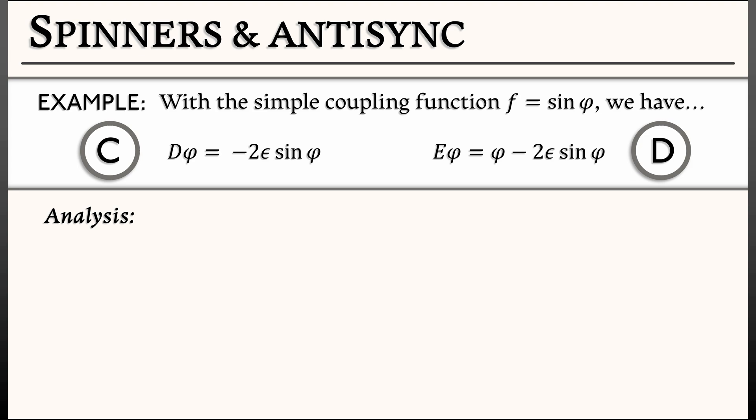Let's solve for the equilibria. When I set -2ε sin φ equal to zero, I just look for where sine vanishes. This vanishes at 0 and π and -π and 2π and really any multiple of π. But because we're on the circle, there's really only two equilibria: one at zero and one at plus or minus π.